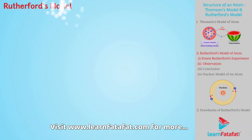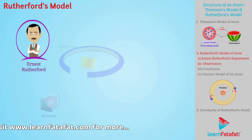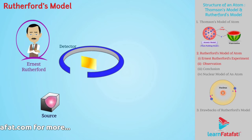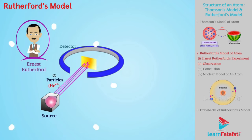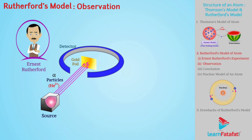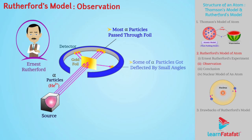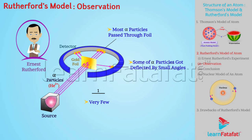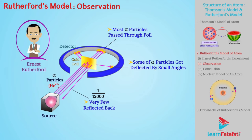In Rutherford's model, Ernest Rutherford carried out an experiment in which he bombarded alpha particles — that is, helium ions — on a gold foil of small thickness. He observed that most of the alpha particles passed through the gold foil. Some alpha particles got deflected by small angles. Very few — say, 1 out of 12,000 particles — were reflected back on the same path.